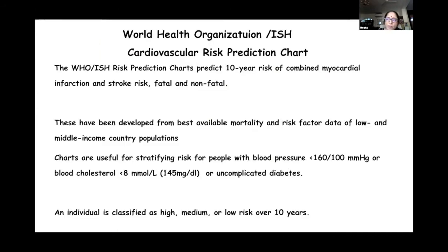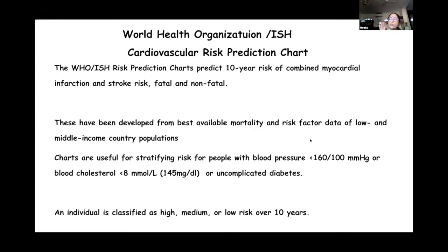From the Indian Menopause Society, we have adopted the WHO-ISH charts because they predict a 10-year combined risk of myocardial infarction and stroke — fatal and non-fatal. These charts have been developed from the best available mortality and risk factor data, using statistical analysis especially for low and middle income countries. This is a very simple model that can be used not only by the doctor or clinician, but also by paramedical staff or even by the woman herself.